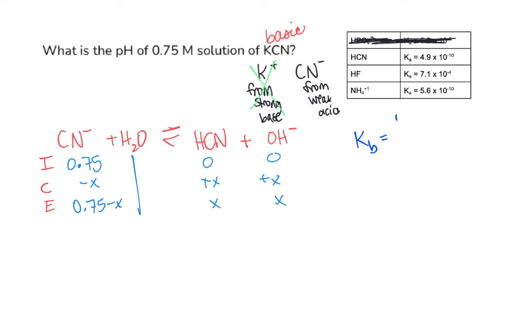Kb is going to be equal to Kw over Ka. When you plug those numbers in, that's the constant for autoionization of water and then the Ka from the chart for the HCN, you're going to get a Kb for its conjugate base the CN- of 2.0 times 10 to the negative fifth.